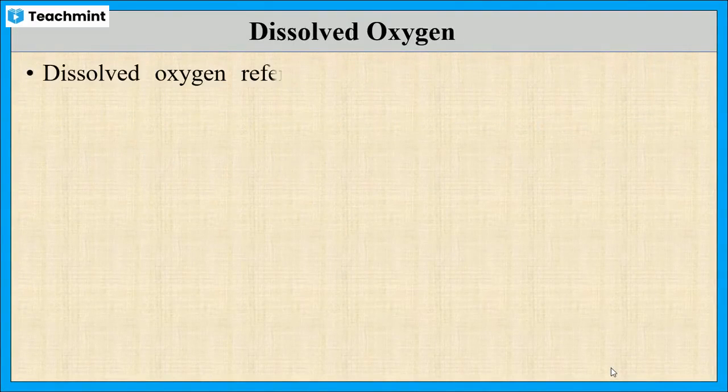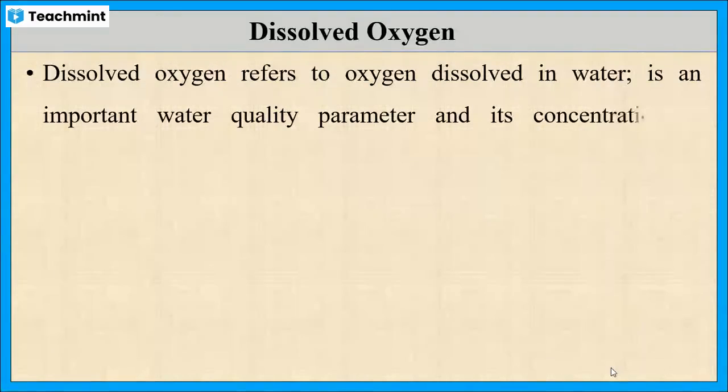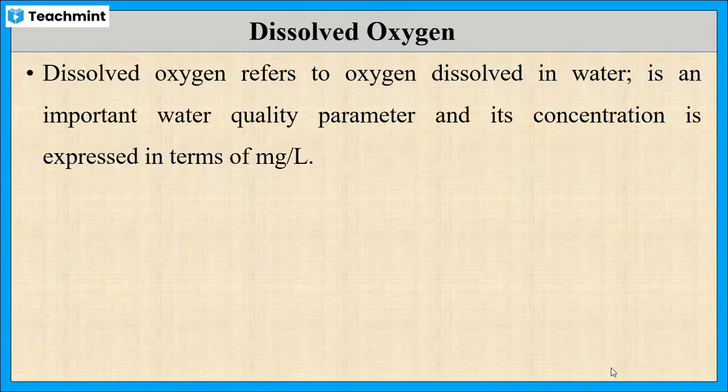Dissolved oxygen is an important parameter of water which detects the quality of water, and it is expressed in milligram per liter or in ppm, that is parts per million.